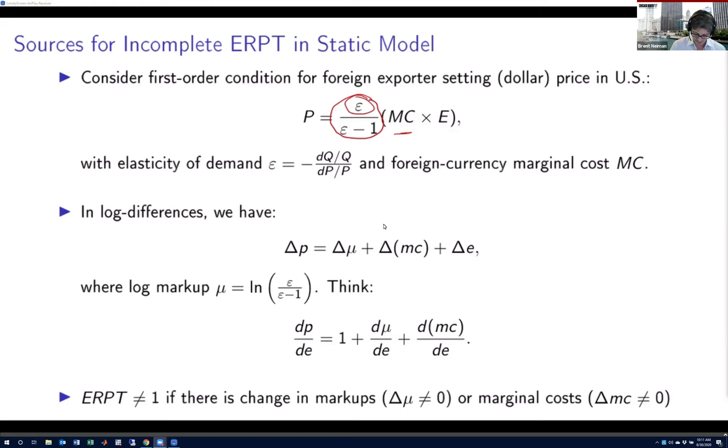If you take log differences of this top expression, then you get that the change in—or you should really think of this as the percentage change because it's a log change—in the import price is equal to the percentage change in the markup, plus the percentage change in the marginal cost, plus the percentage depreciation in the value of the dollar. You can essentially think of it this way: that the percentage change in the import price relative to the percentage change in the exchange rate is going to be equal to one, unless there's some countervailing or offsetting force imposed by changes in markups or in marginal costs.